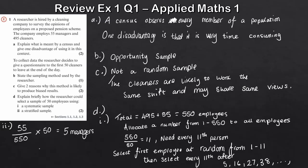Five managers. If we do the same now with the cleaners, that's going to be 495 again, divide by the total 550, and then we times that by 50 again, and that gives us 45 cleaners. Then to finish that, all we need to do is use random numbers to choose 5 managers and 45 cleaners. So use random numbers to choose 5 M and 45 C for cleaners. So that's how you'd finish that question after giving both of them.